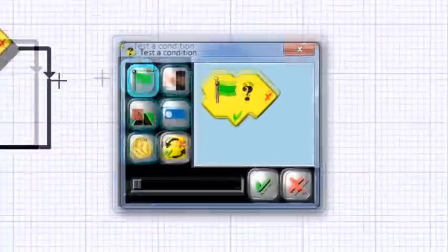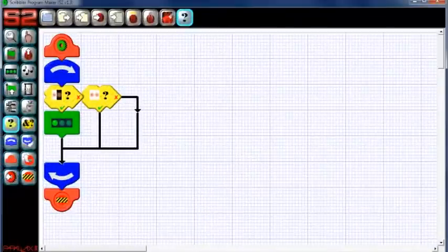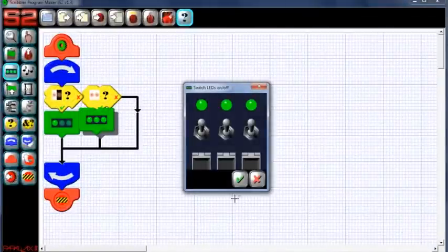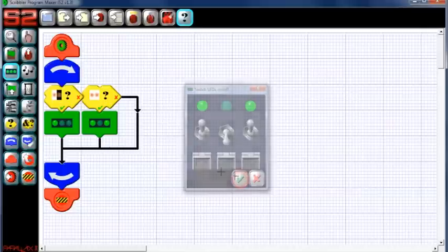If both sensors are over a white surface. If this is true, both LEDs will be on. If this is false, we'll check another case.